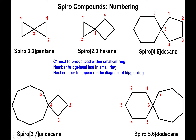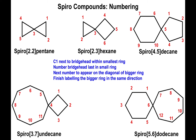Once you get to the big ring, you simply follow the same trajectory until you complete numbering all the carbons, stopping one short of the bridgehead since it's already been labeled. In the bow-tie shape, if the upper-left corner goes up and to the left, continue counterclockwise. If up and to the right, continue clockwise. In each example: up and to the left means counterclockwise; up and to the right means clockwise. Simply complete labeling each ring in that fashion.